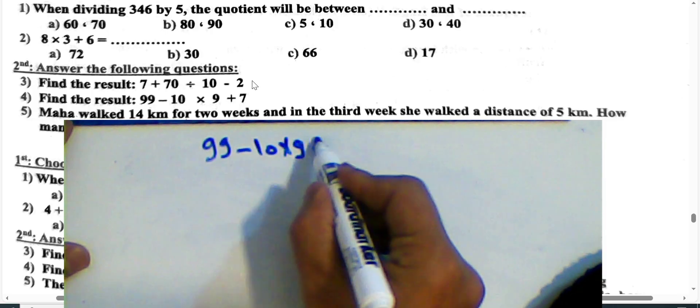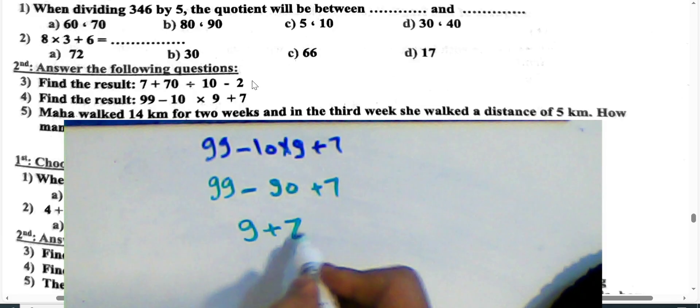Next example: 99 minus 10 times 9 plus 7 plus 7. Multiplication first: 10 times 9 equals 90. Then 99 minus 90 is 9, and 9 plus 7 equals 16.